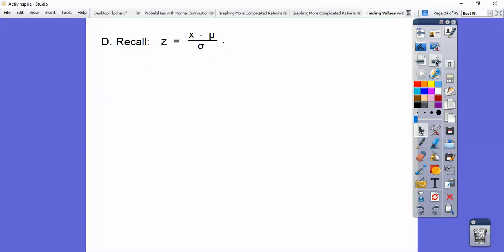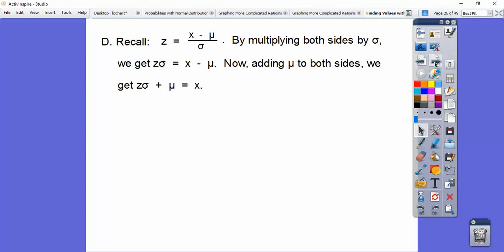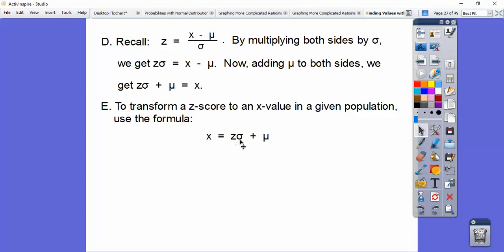So recall our z-score formula is found by doing x minus μ divided by the standard deviation. So by multiplying both sides by the standard deviation, we multiply both sides by this σ formula. I've been saying r in my class. We get zr equals the numerator. Then if we add the mean to both sides, we get zr plus the mean equals our x value. So we're going to use that formula to transform a z-score to an x value with a given population. So here's our formula: x equals z times the standard deviation plus the mean right there.